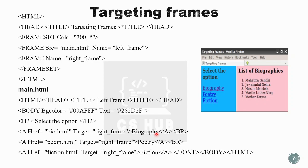To summarize targeting frames: create the frameset, insert the frames, give the target frame a name such as name='rightframe', then inside main.html use links with the target attribute set equal to that frame name.